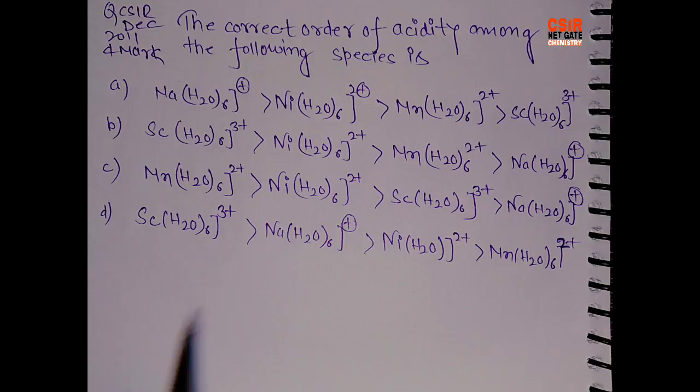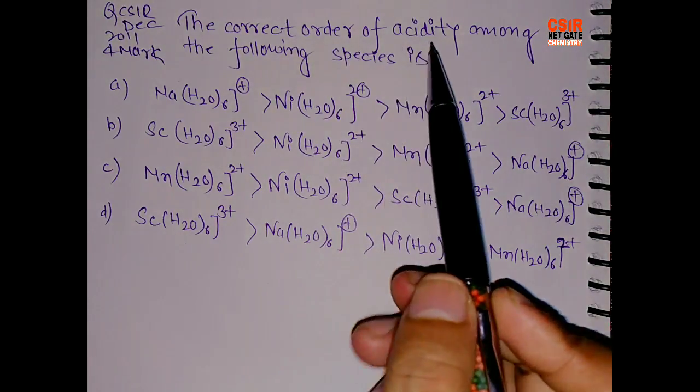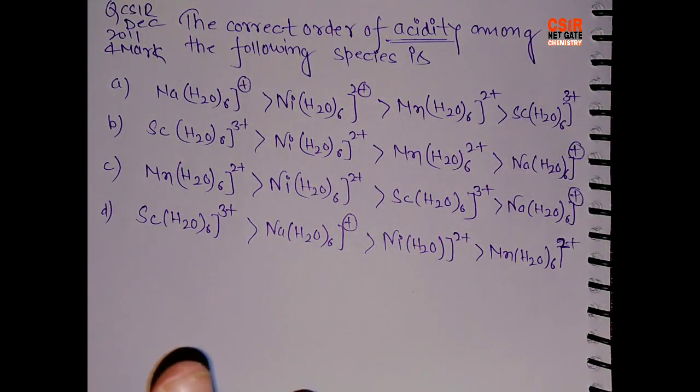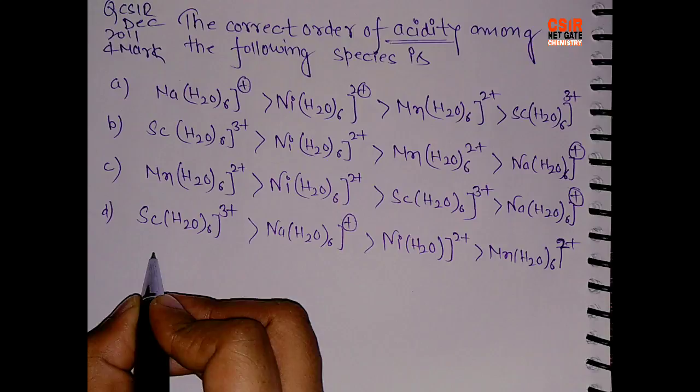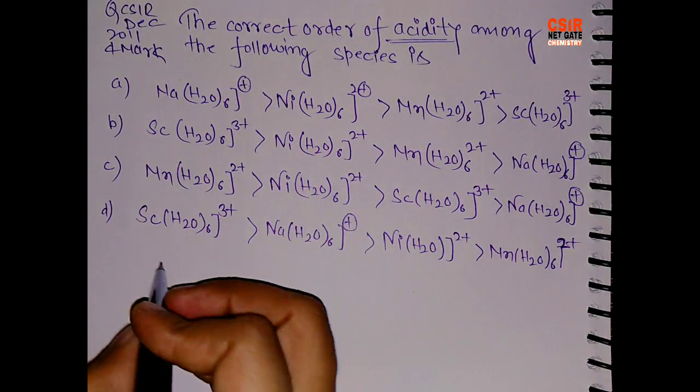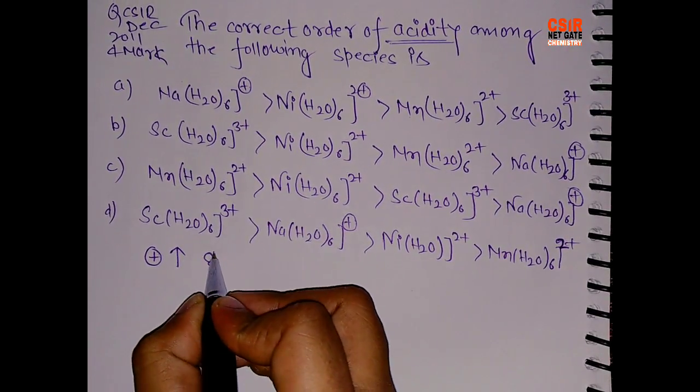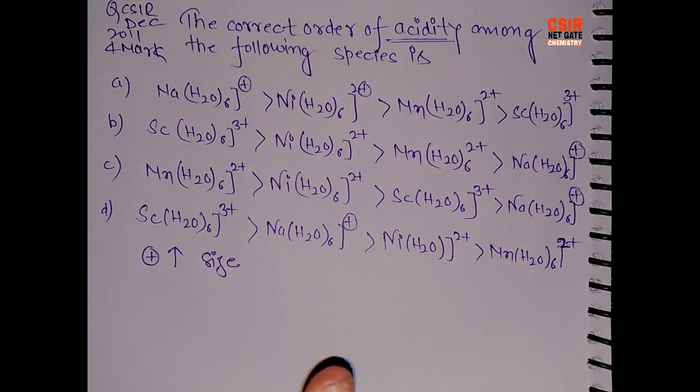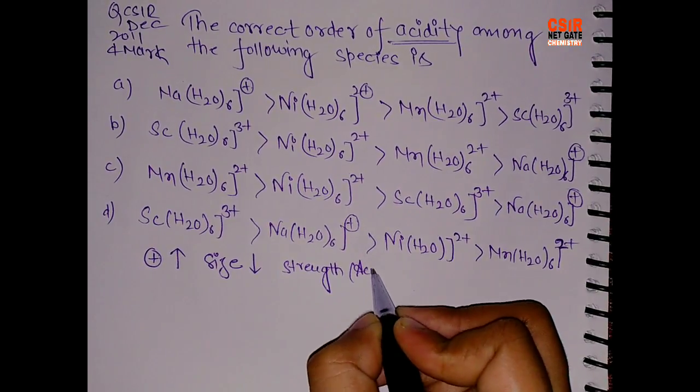Now what basics says - first of all let me read the question. We have so many complexes and we have to tell the correct order of acidity. From 12th standard we've been studying that if a central cation has higher charge on the central metal like nickel or manganese, higher the positive charge, we know smaller is the size. I'm not going into the detail of Z effective, I'm just taking the concept. Higher is the positive charge, size will be minimum.